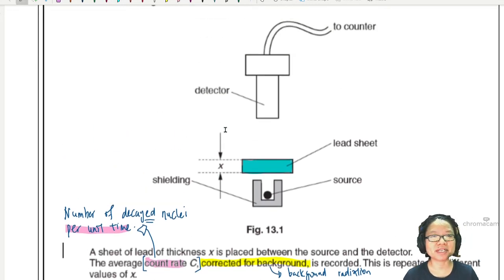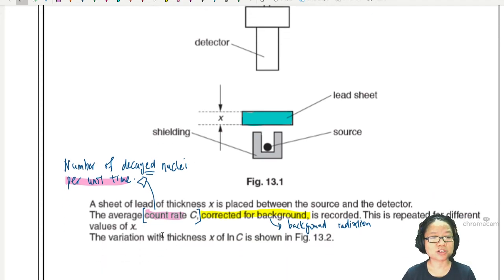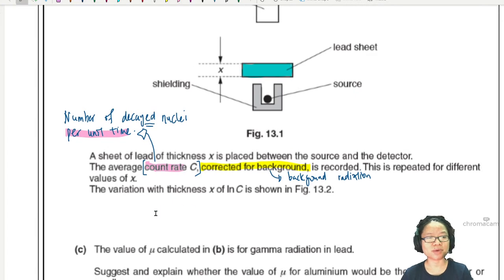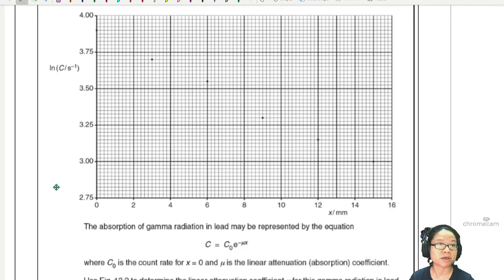What is count rate? Count rate here means you count the decay - the number of decayed nuclei per unit time. The detector is normally a Geiger-Müller counter, or GM counter. You can check out the activity video if you want to know more about how a GM counter works. The GM counter picks up the decayed nucleus by creating a crackle or a static, and we can measure this with the counter. The counter counts the average number of nuclei that decay in a given unit time. The variation of thickness X with ln C is shown in figure 13.2, which is a graph.